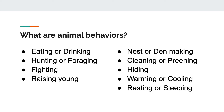The first one is eating or drinking. Just like you and I, animals need to eat and drink to stay alive. The next one is hunting or foraging, which is looking for food. Unlike you and I, animals don't have a grocery store or a refrigerator to go to to find food — they have to search it out.